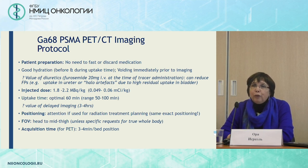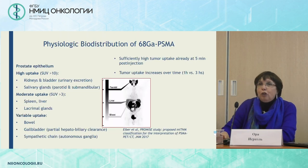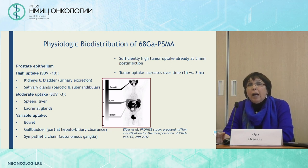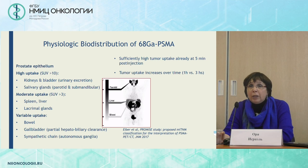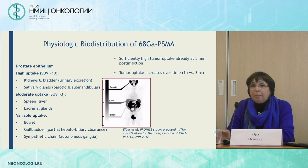It is the usual field of view and acquisition time. When we look at the physiologic biodistribution of gallium PSMA, the highest uptake is in the prostate. Very high uptake is also present in the kidneys and bladder because of urinary excretion, and in the salivary glands. Moderate uptake is present in the spleen, liver, and lacrimal glands, and some low-intensity variable uptake in the bowel, gallbladder, and sympathetic chain.